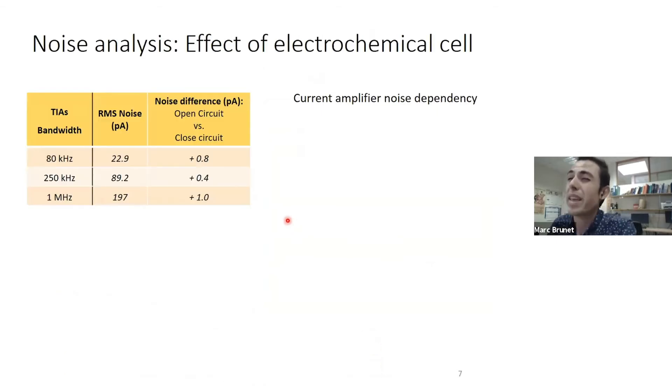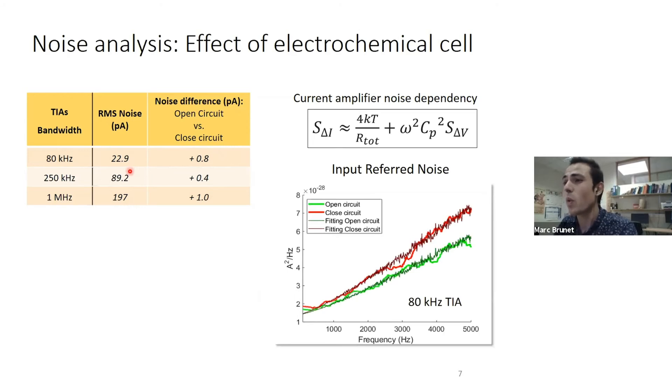Putting numbers into this, the open circuit RMS noise for the commercial one is about 600 picoamps, but in our case with just a slightly higher bandwidth, it's about 90 picoamps. We also wanted to evaluate the effect of the electrochemical cell formation on the noise levels. We see that when we go from open circuit to closed circuit, we just increase about one picoamp in the noise levels, which compared to the intrinsic noise levels of the current amplifier is pretty minimal.